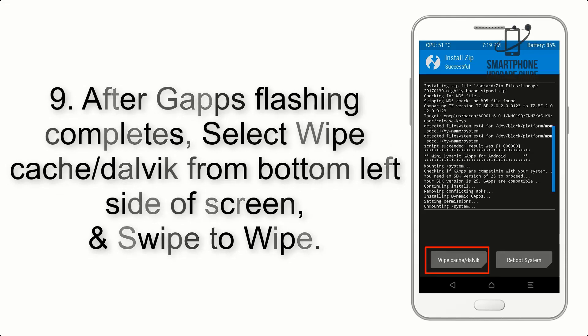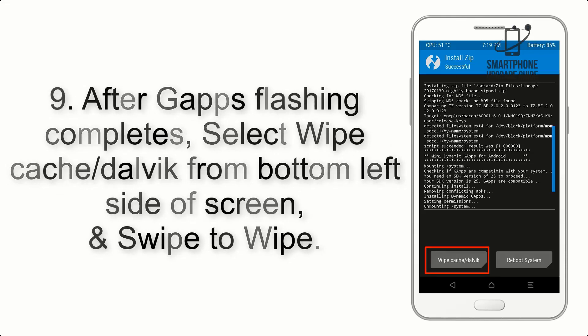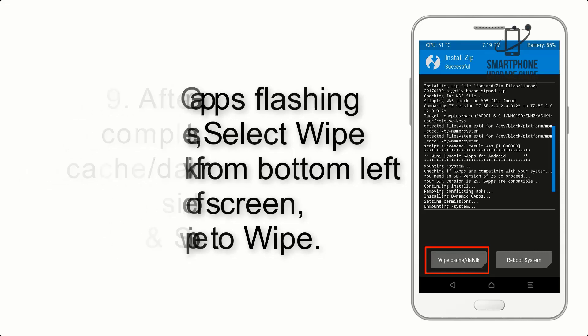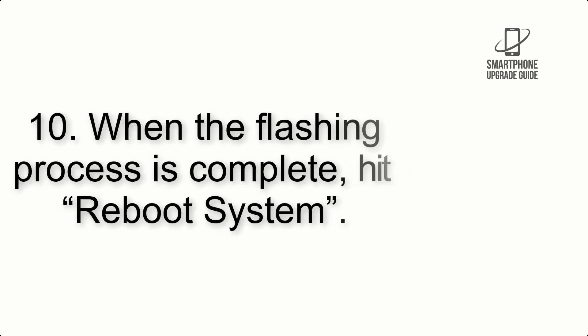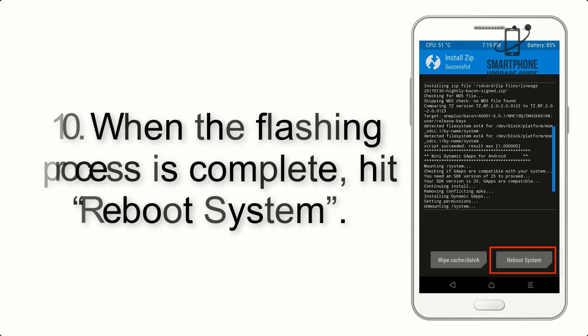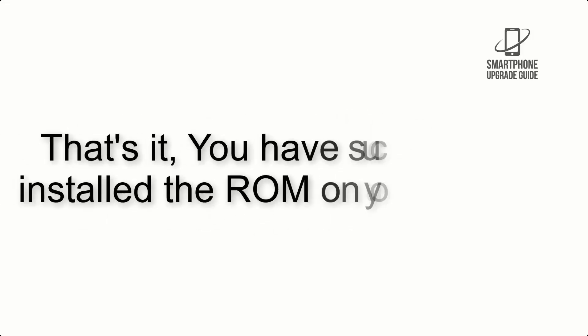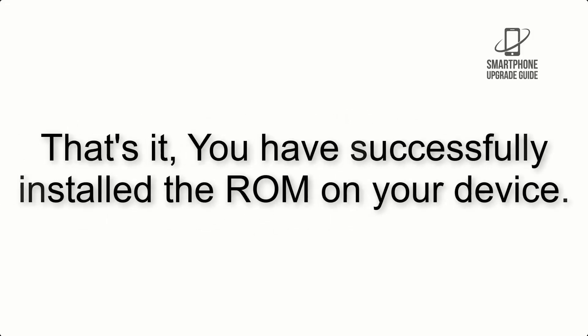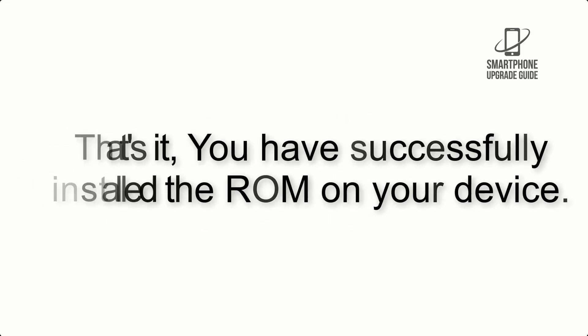Step 9: After G apps flashing completes, select Wipe Cache and Dalvik from the bottom left side of the screen and swipe to wipe. Step 10: When the flashing process is complete, hit Reboot System. That's it — you have successfully installed the ROM on your device.